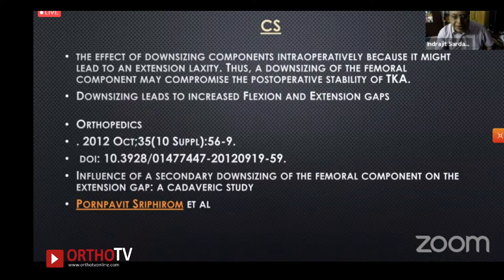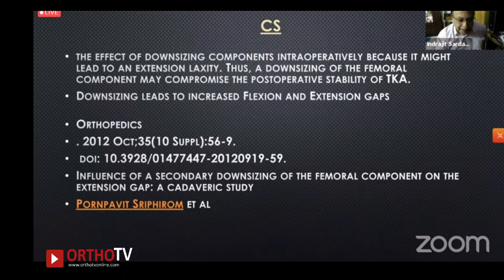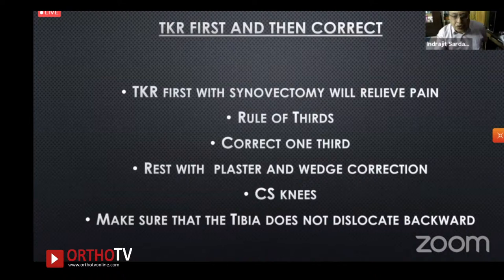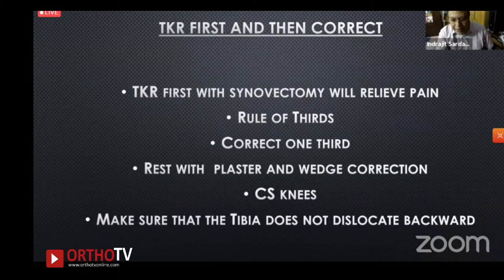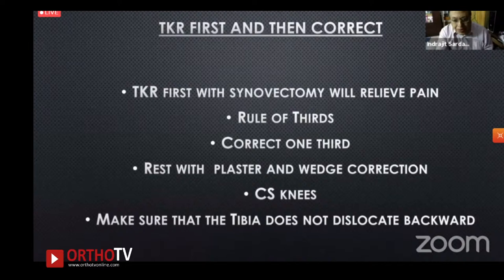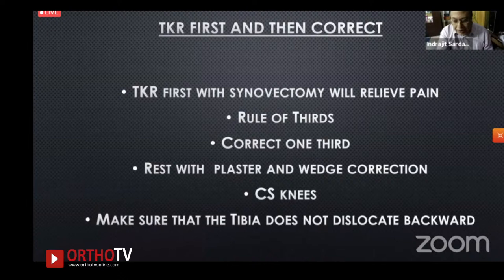Downsizing components intraoperatively in constrained systems may compromise postoperative stability. There are two methods: TKR first for fixed flexion deformity, or correct before TKR. TKR first with synovectomy relieves pain, then apply the rule of thirds for gradual correction with cast wedging and physiotherapy, using a constrained system and ensuring the tibial baseplate does not dislocate posteriorly during extension.